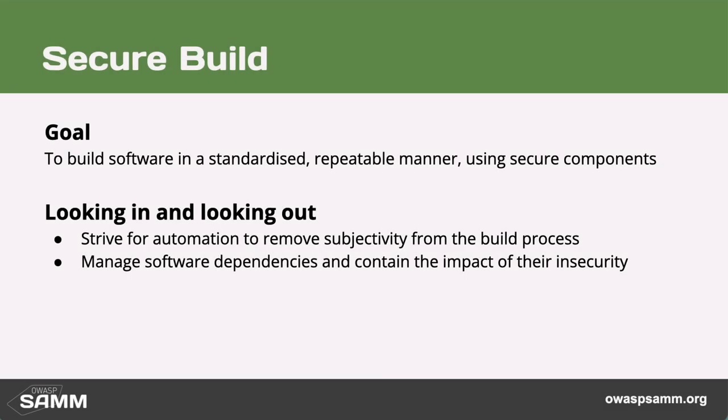The secure build practice emphasizes the importance of building software in a standardized, repeatable manner, and in doing so by using secure components including third-party software dependencies. This practice focuses on removing any subjectivity from the build process by striving for full automation. An automated build pipeline can include additional automated security checks such as SAST and DAST tooling to gain further assurance.